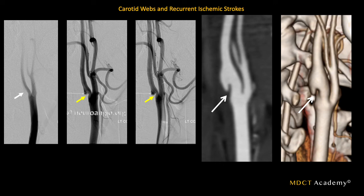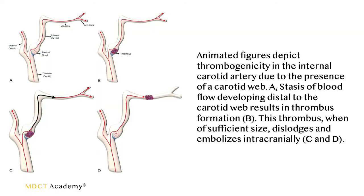Looking at images A through D: if you have a fibrous cap, thrombus formation occurs at the carotid web. With any movement or turbulent flow due to increased blood pressure, the clot can be dislodged, travel up into the brain, and cause thrombosis or blockage of the middle cerebral artery. This is why optimal enhancement of the carotid arteries during carotid CTA is so important.